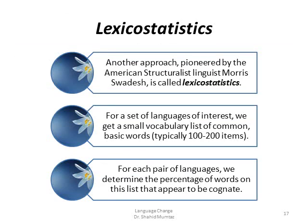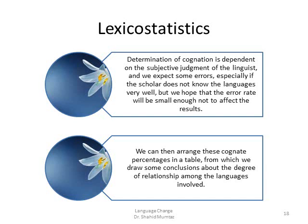Another approach is lexicostatistics, pioneered by the American structuralist linguist Morris Swadesh. For a set of languages of interest, we compile a small vocabulary list of common basic words — typically 100 to 200 items. For each pair of languages we determine the percentage of words on this list that appear to be cognate. The determination of cognation is dependent on the subjective judgment of the linguist.